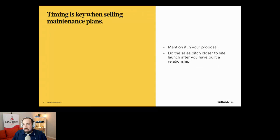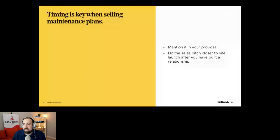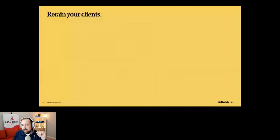When selling these plans, we mention it in the proposal and include the details there. We talk about it a little during the site proposal phase, but do more of the sales pitch as we get closer to launch — usually during one of the revision phases. We say, 'Hey, we want to go ahead and get you set up with the maintenance and hosting so we can keep the site running.' By that point we've built a relationship and they trust us. We can say, 'We know this plugin can be a little finicky — you bring us in, we built the site, we can definitely keep this working for you.'